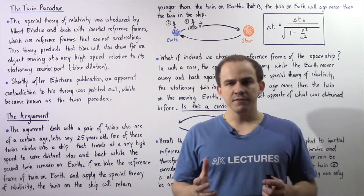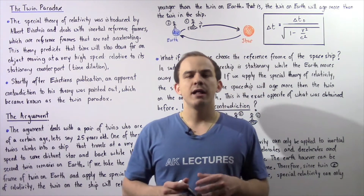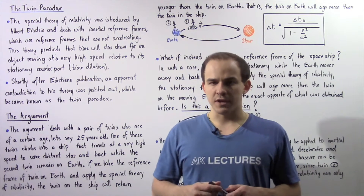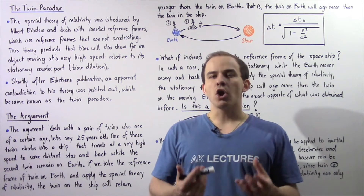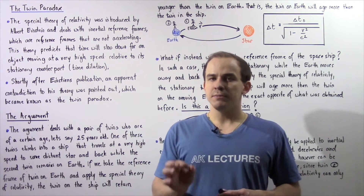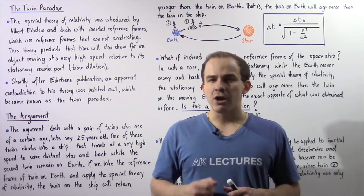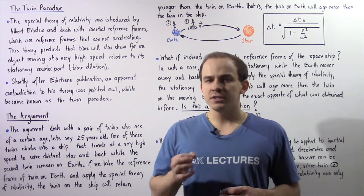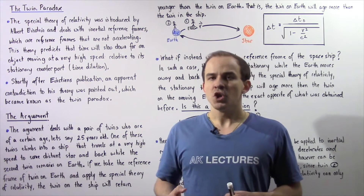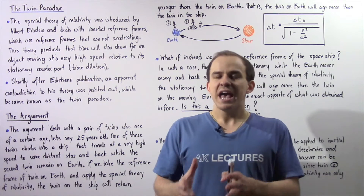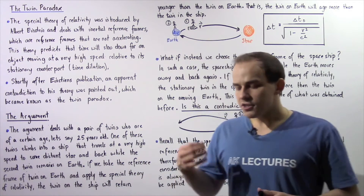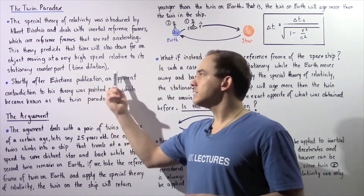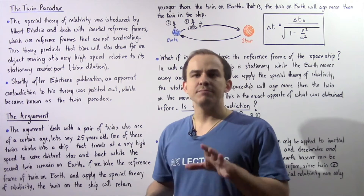The special theory of relativity was introduced by Albert Einstein in 1905. This theory deals with inertial reference frames — reference frames that are not accelerating. The theory predicts that time will slow down for objects traveling at very high speeds relative to their stationary counterpart. This concept is known as time dilation.